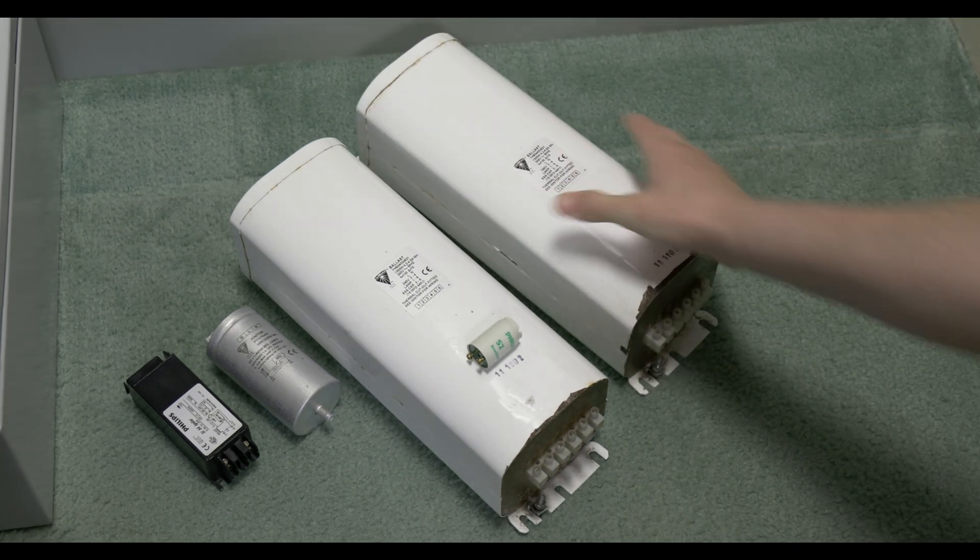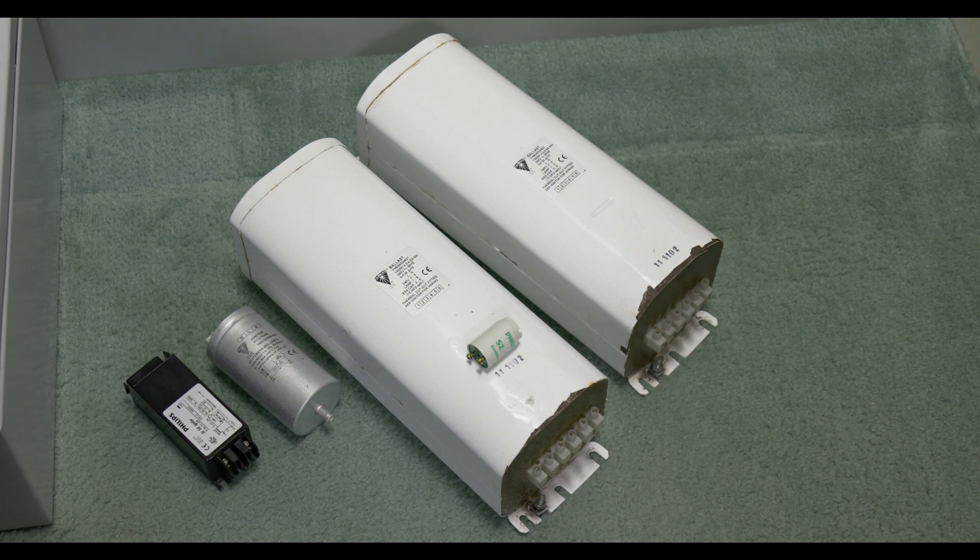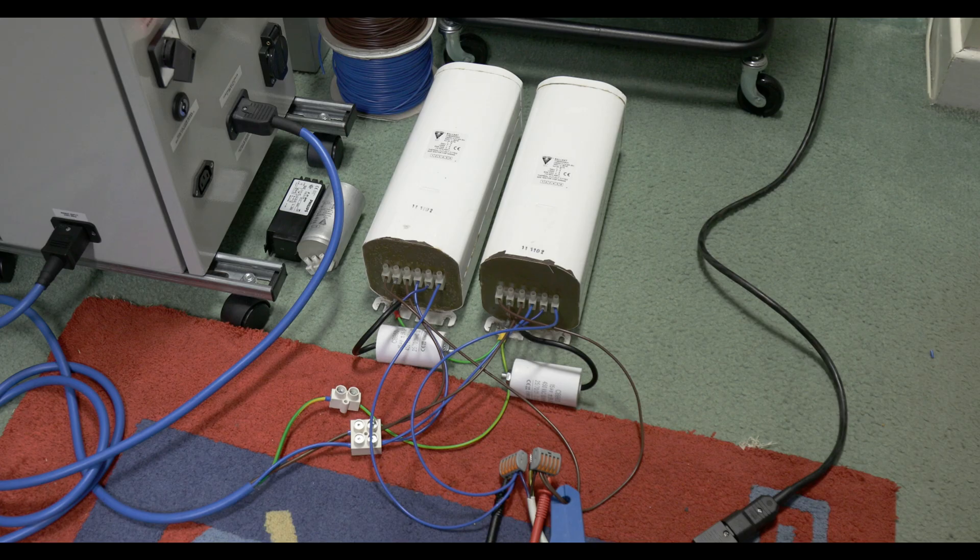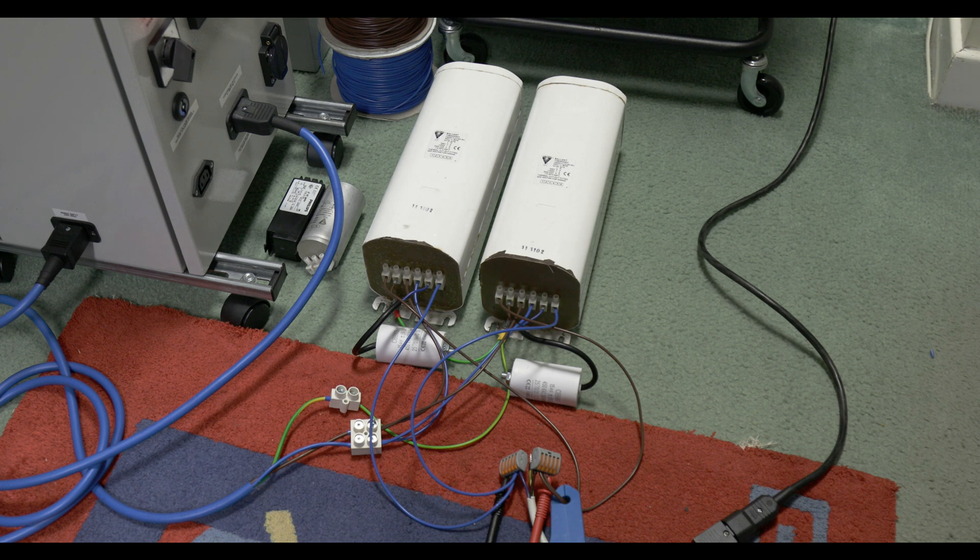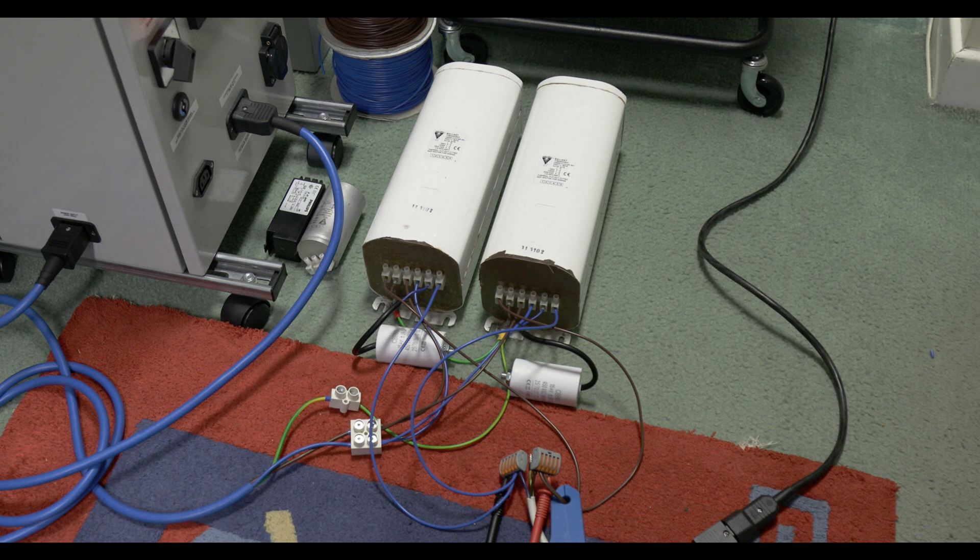Right, so there's the ballasts fired up in parallel. It's very important to get the phasing right, so I've made sure that's okay. And this lamp does have integral starting electrodes, so the two high voltage igniters on the left, which is a Phillips parallel and a palm superimposed, we won't need them. It's just straight to the lamp.